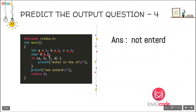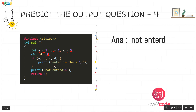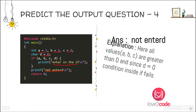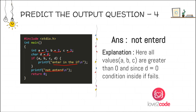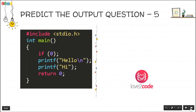Suppose d were 1 instead — we would get the output 'entered' followed by 'not entered' on the next line. The explanation: all values a, b, c are greater than 0, but since d is 0 the condition inside the if fails.